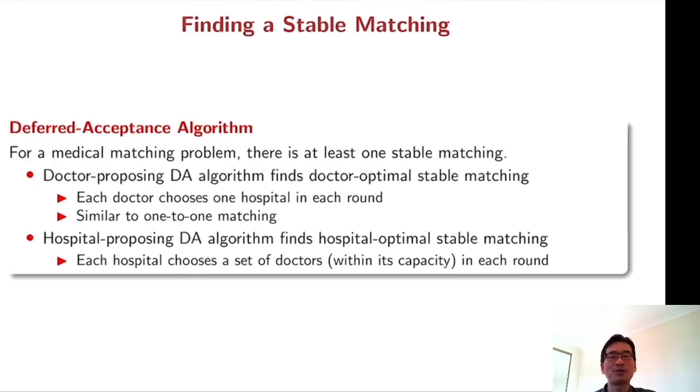So as I mentioned earlier, we can find a stable matching using deferred acceptance algorithm. Again, we have two versions of the algorithm. One is a doctor proposing algorithm and the other is hospital proposing algorithm. I'm going to explain this algorithm with an example.